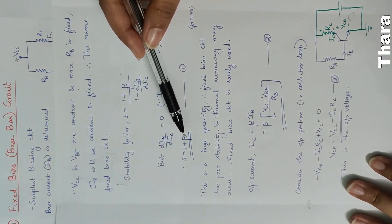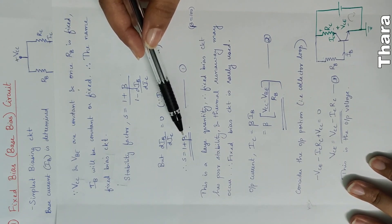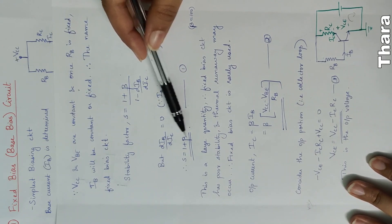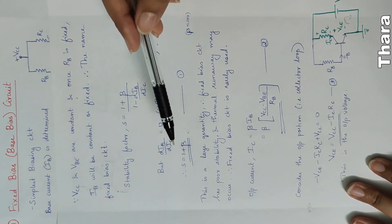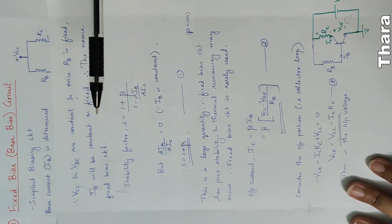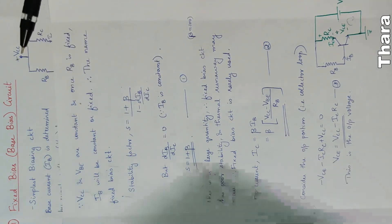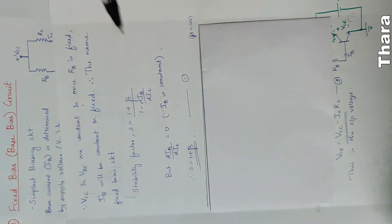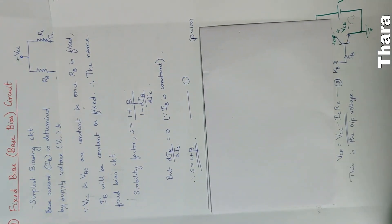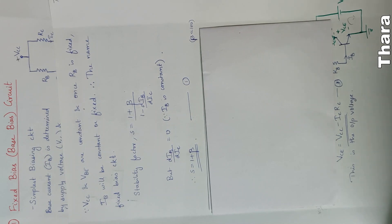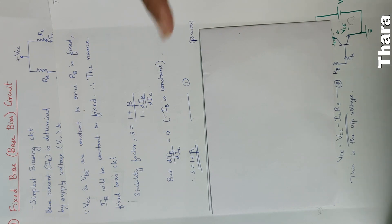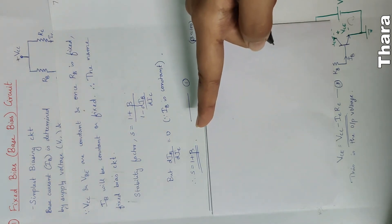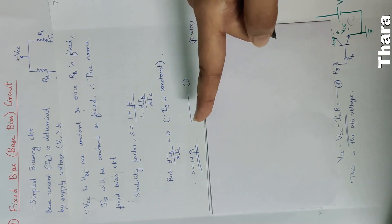S equals 1 plus beta means we have a large quantity. That value is approximately 100. S value is greater. When beta is a high value, S will increase.